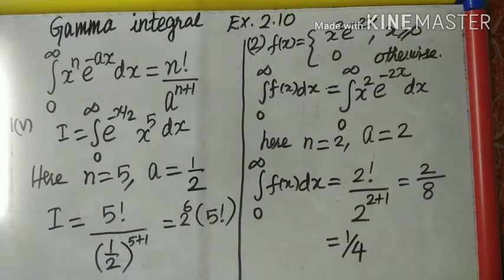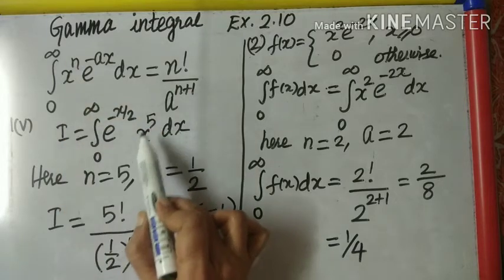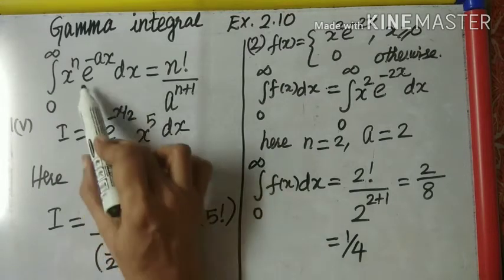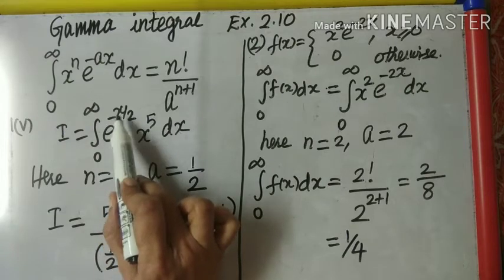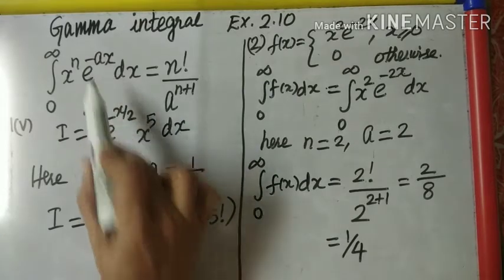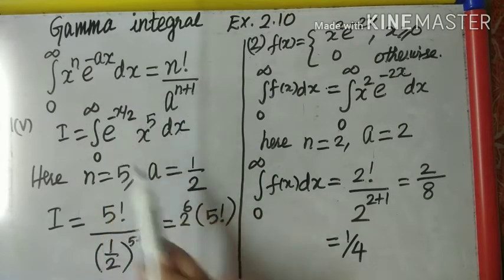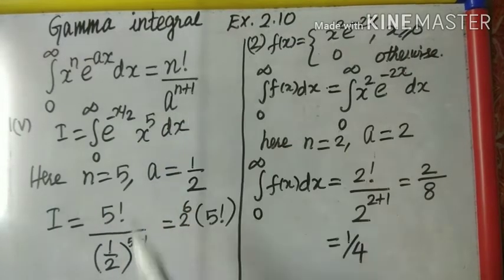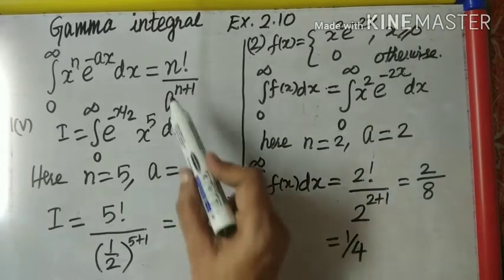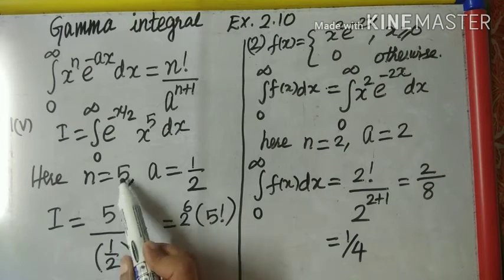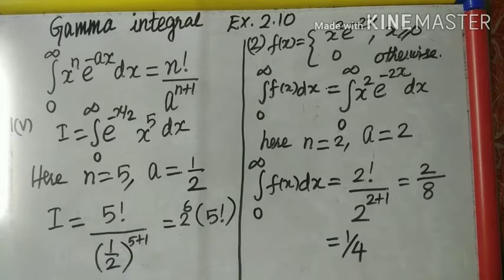We are given a problem. Let us check whether I can apply this formula — 3 conditions. Condition 1: limits from 0 to infinity — correct. Condition 2: x to the power 5, so n equals 5 — correct. Condition 3: e to the power of negative, and the coefficient of x I take as a. Here e to the power minus x over 2, so a equals 1 by 2. Applying the formula: 5 factorial divided by a to the power n plus 1, that is (1/2) to the power 6. Reciprocating, the answer is 2 to the power 6 times 5 factorial. You can simplify further or leave the answer like this.